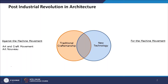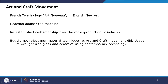Diagrammatically, the post-industrial revolution put the architecture and design fraternity in turmoil, dividing them into two opposite poles for visual expression. The for the machine movement accepted new technology, whereas the against the machine movement accepted traditional craftsmanship, with two different movements within it. Art Nouveau is a French terminology meaning 'new art' — it was a reaction against the machine and reinforced craftsmanship over mass production.